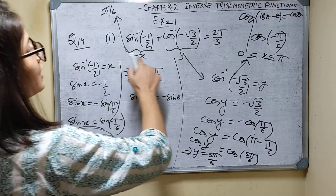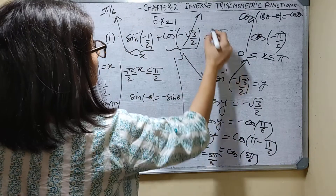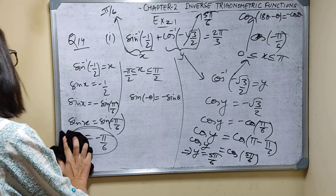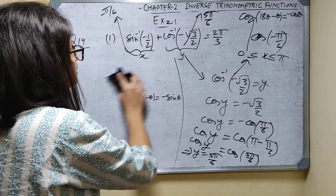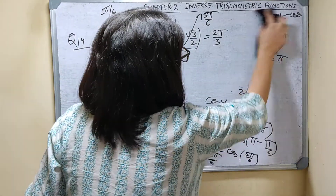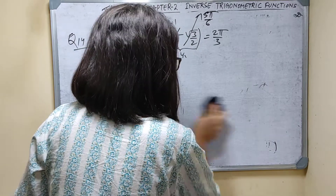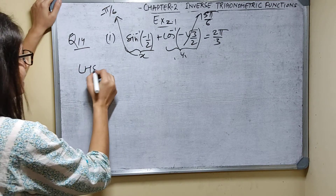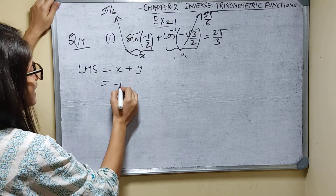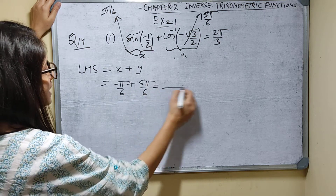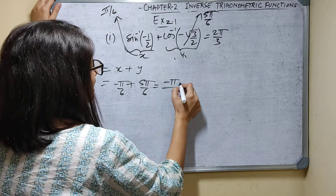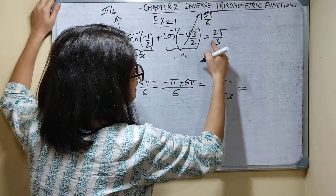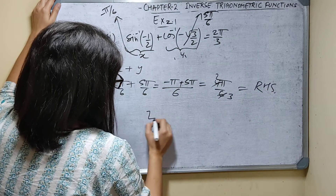Now LHS equals x plus y = minus pi by 6 plus 5 pi by 6. The LCM is 6, so this is (minus pi plus 5 pi) by 6 = 4 pi by 6 = 2 pi by 3, which equals RHS. So LHS equals RHS, and it is proved.